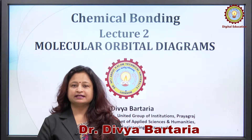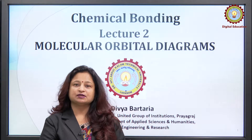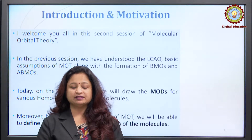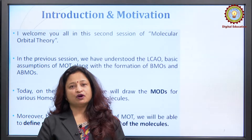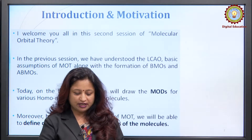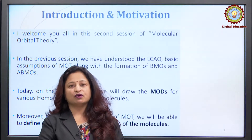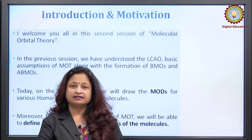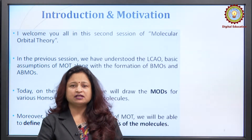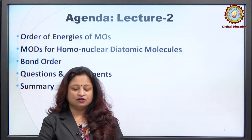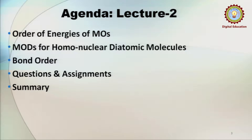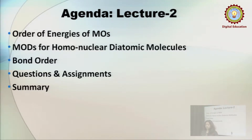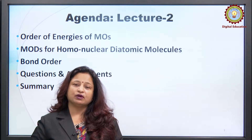Good morning everyone, welcome to this second session of chemical bonding. Today's topic is molecular orbital diagrams. In the previous session we understood the linear combination of atomic orbitals, basic assumptions of molecular orbital theory, along with the formation of bonding and anti-bonding molecular orbitals. Today, on the basis of molecular orbital theory, we will draw molecular orbital diagrams for various homonuclear diatomic molecules, and by applying molecular orbital theory we will define certain properties of molecules.